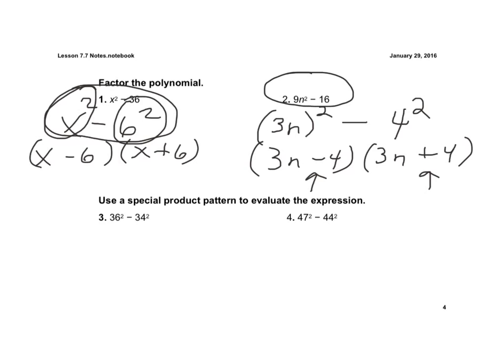And then here, we'd have 36 minus 34 times 36 plus 34. Well, 36 minus 34 is 2, and 36 plus 34 is 70, and 2 times 70 is 140.